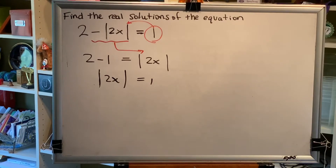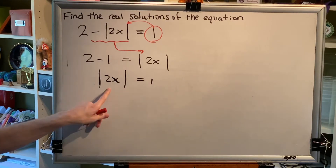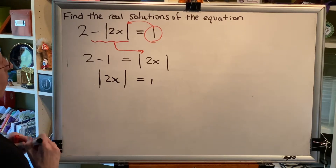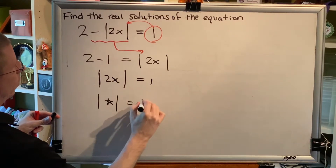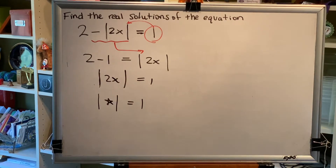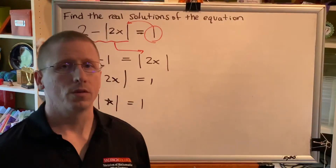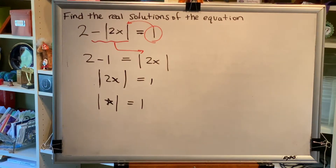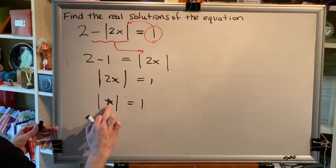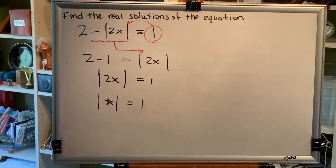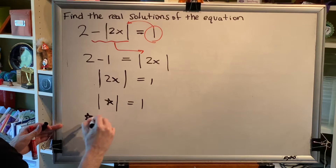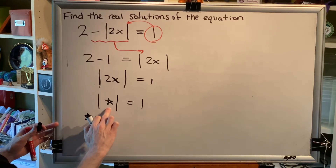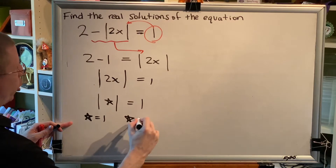Now we're ready to solve this problem. We're going to replace the expression inside the absolute value bars with 'star', so we get the absolute value of star equals 1. Next, we want to ask ourselves what values we can replace star with to make this true. The absolute value of 1 equals 1, so star could be 1, and the absolute value of negative 1 equals 1, so star could be negative 1.